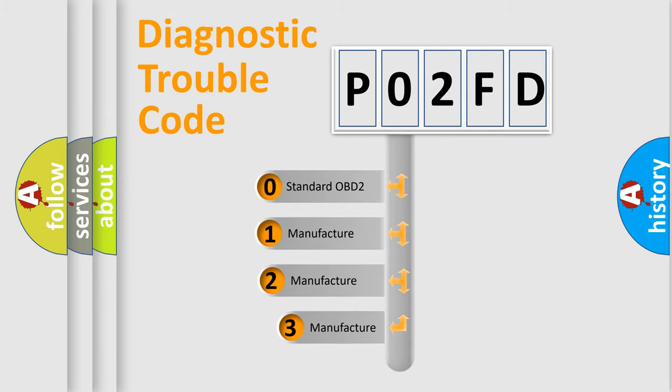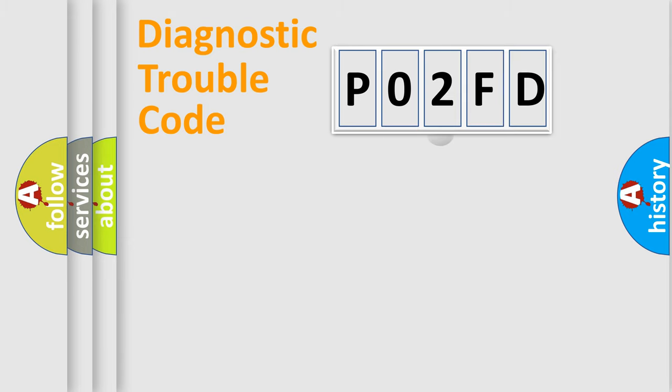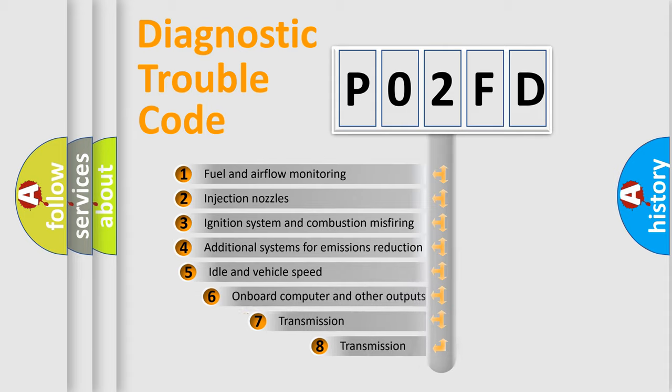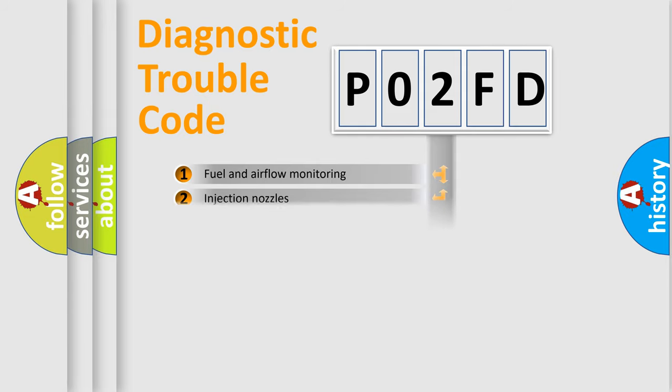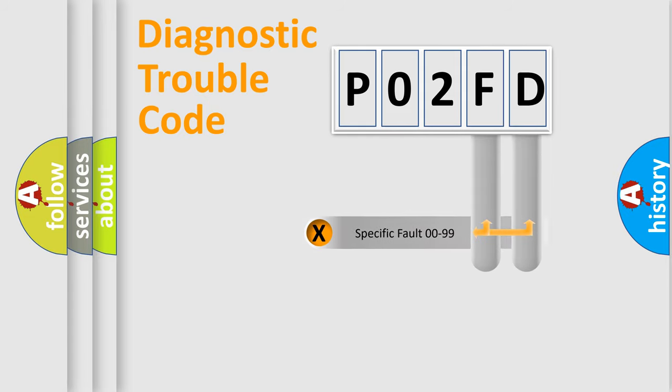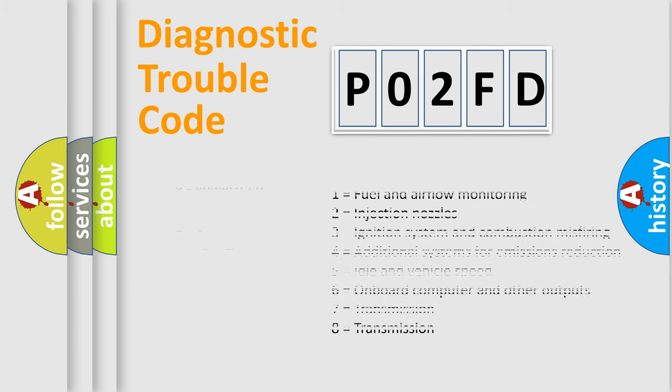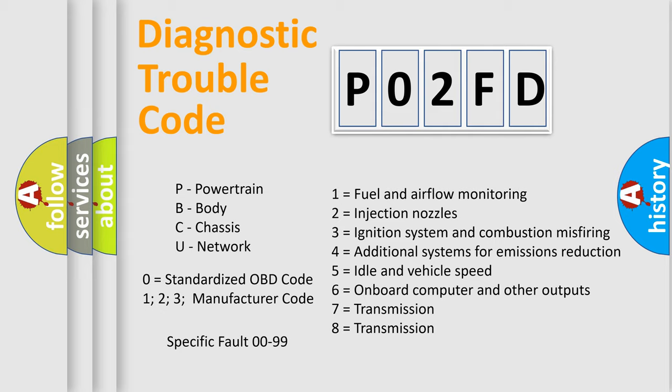If the second character is expressed as zero, it is a standardized error. In the case of numbers 1, 2, or 3, it is a car-specific error. The third character specifies a subset of errors. The distribution shown is valid only for the standardized DTC code. Only the last two characters define the specific fault of the group. This division is valid only if the second character code is expressed by the number zero.